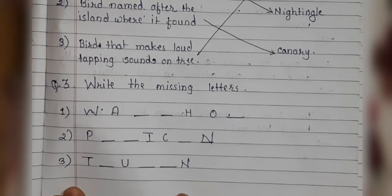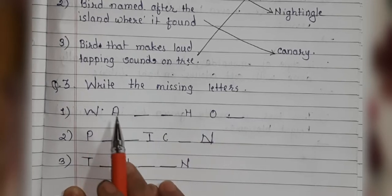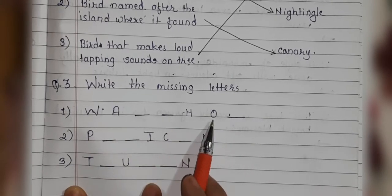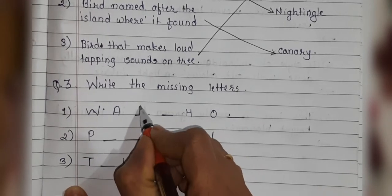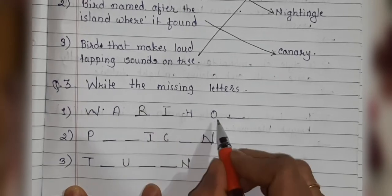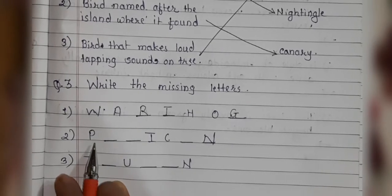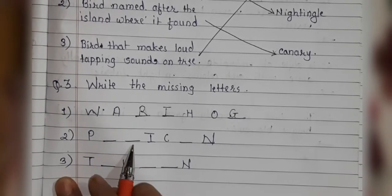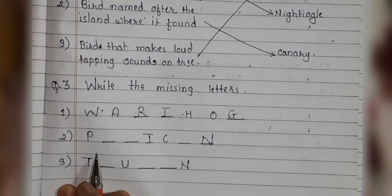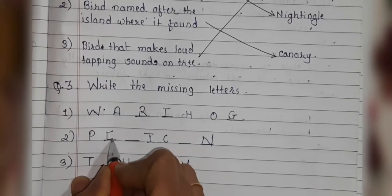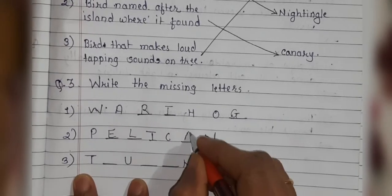See question number 3, write the missing letters. W-A-dash-T-H-O-dash — it is warthog. W-A-R-T-H-O-G. Next: dash-P-dash-dash-I-C-dash-N — it is pelican. P-E-L-I-C-A-N. Pelican.